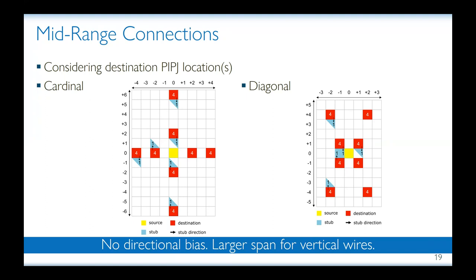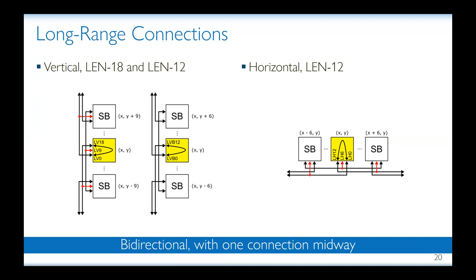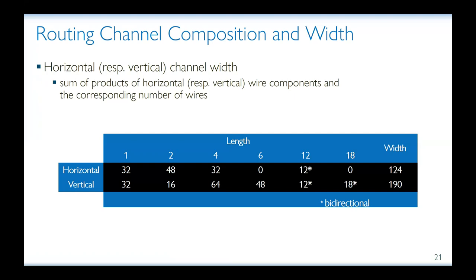7 Series FPGAs also contain long wires of length 12 and 18. What is interesting about them is that they appear to be bidirectional. This may not be too surprising as a similar shift from unidirectional to bidirectional long wires has already been reported for Intel Arria 10 devices. The longs are also an exception in terms of intermediate taps, because apart from the vertical length-one wires which have no taps, others have one tap precisely midway. Once all emanating wires are identified, Netcracker can compute the channel width by computing a sum of products of wire lengths in x and y direction and the corresponding number of wires. This table summarizes the values obtained.